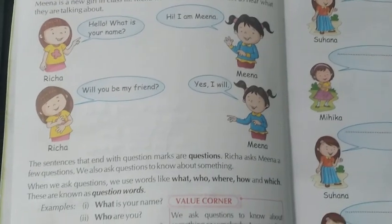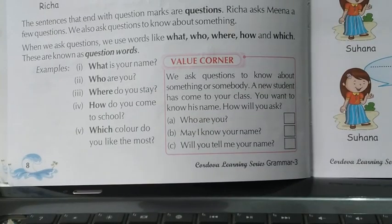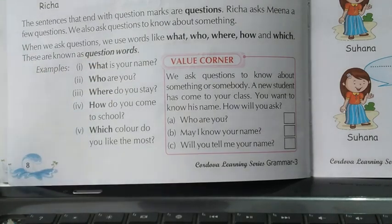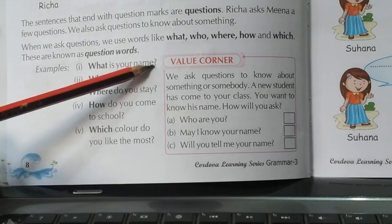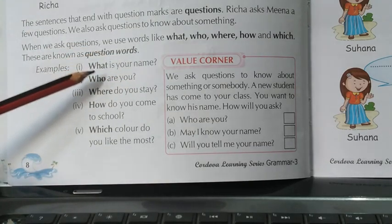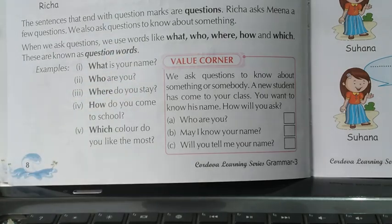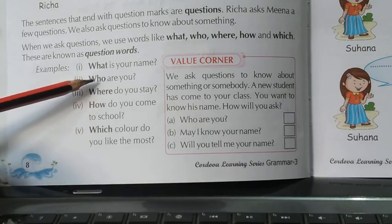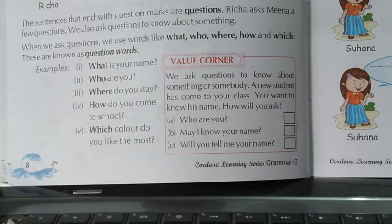For example, some examples are given here. If we want to know the name of some person — अगर हम किसी का नाम जानना चाहते हैं — we use the question: What is your name? We use the word 'what' and at the end there is a question mark. Likewise, another question: Who are you? — आप कौन हो? If we want to know about somebody, we ask: Who are you?